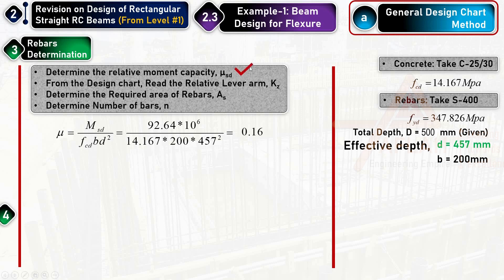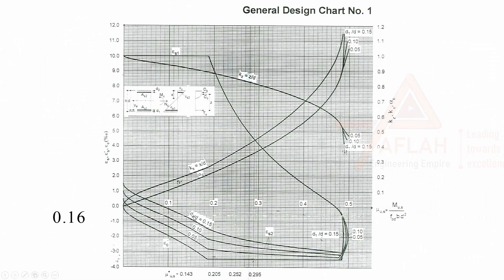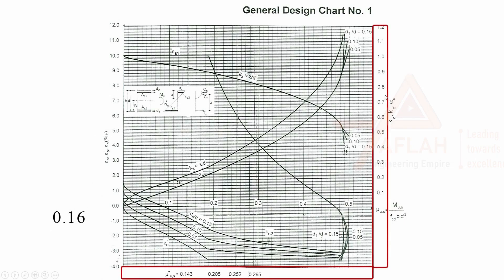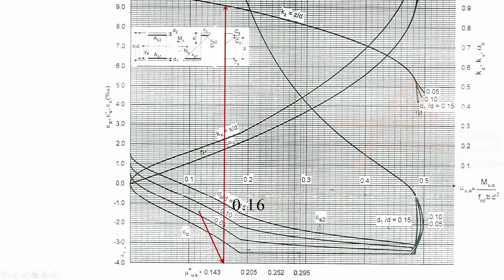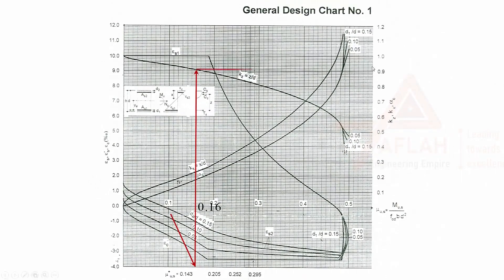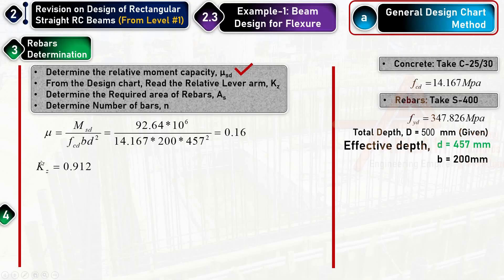Using the design chart with μ = 0.16, we locate the value on the horizontal axis, read upward to the kz curve, then horizontally to get the lever arm factor kz = 0.912.